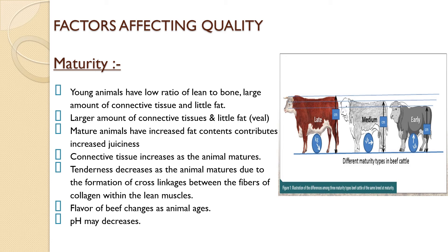Connective tissue within lean tissue increases in total amount as an animal matures. This decrease in tenderness may result from increased formation of cross-linkages between the fibers of collagen within the lean muscle as the animal ages. Beef flavor also undergoes change with age; the color of the uncooked flesh gradually becomes redder and sometimes darker. The pH of muscle may also decrease, and differences from one carcass to another make maturation changes difficult to quantify.